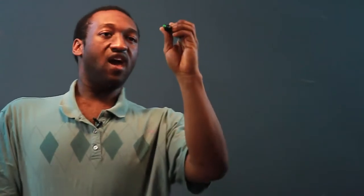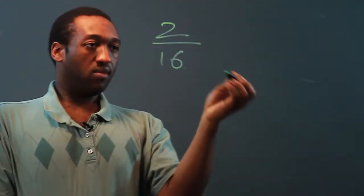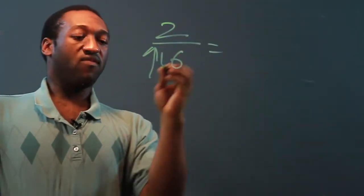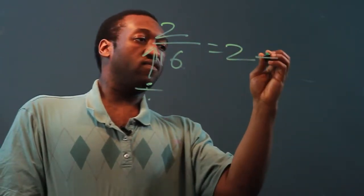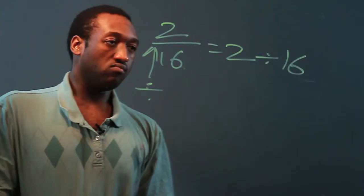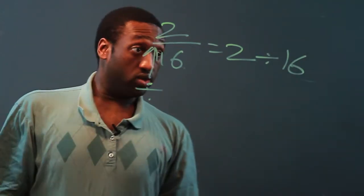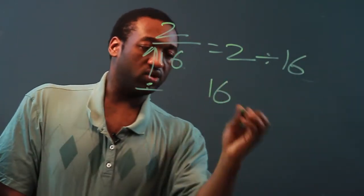So let's say I have 2 sixteenths. Now again, my fraction bar is the same thing as division. So we can say 2 divided by 16. Now what we'll do is use long division again.